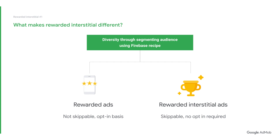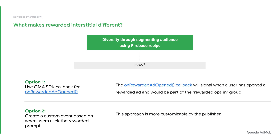You can adopt a diversified strategy by showing traditional rewarded ads to users who frequently opt-in, and showing rewarded interstitials to those who don't. If you are unsure on how to segment your users, we have a Firebase recipe here for you. There are two options to consider. Option one: use the GMA SDK callback for on rewarded ad opened. This callback will signal when a user has opened a rewarded ad, and hence will be classified as part of the rewarded opt-in group.